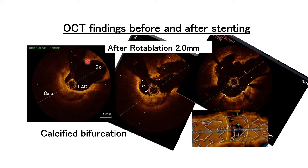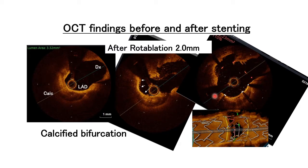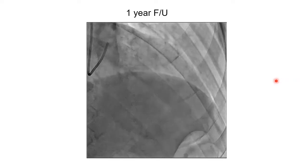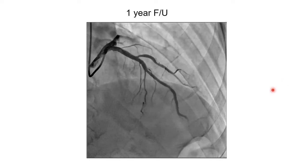OCT shows that the calcium was ablated by rotablation. After stenting, no carina shift happened and wide opening of the stent was achieved. One-year follow-up shows no restenosis.